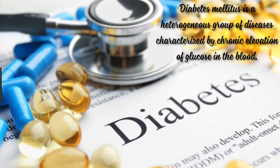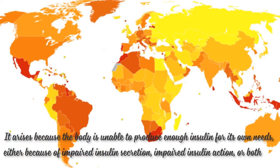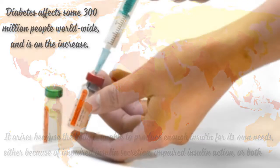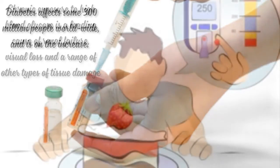Diabetes mellitus is a heterogeneous group of diseases characterized by chronic elevation of glucose in the blood. It arises because the body is unable to produce enough insulin for its own needs, either because of impaired insulin secretion, impaired insulin action, or both. Diabetes affects some 300 million people worldwide, and is on the increase.